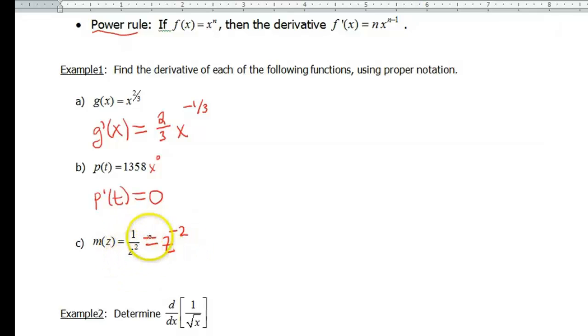Remember whenever you have a fraction, bring it up - that makes your exponent turn negative. So our derivative in this case, m'(z), is going to be - our n is negative 2, so bring down negative 2 - z to the negative 2 minus 1 is gonna give us negative 3.